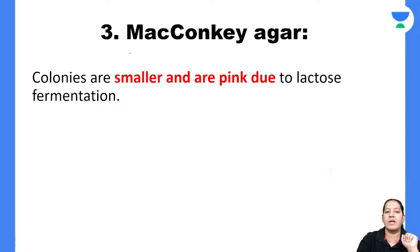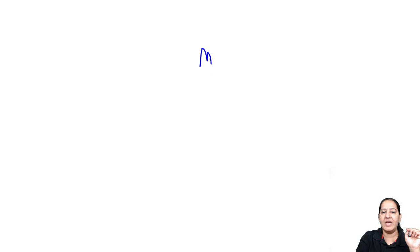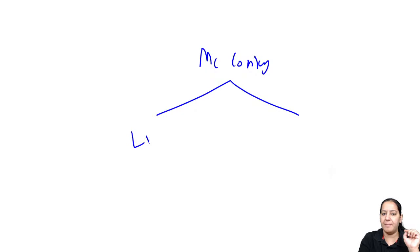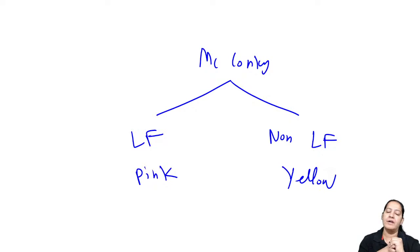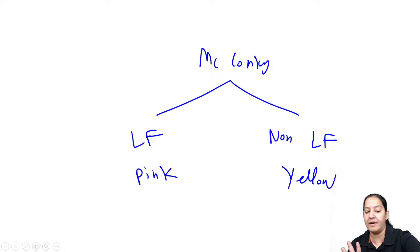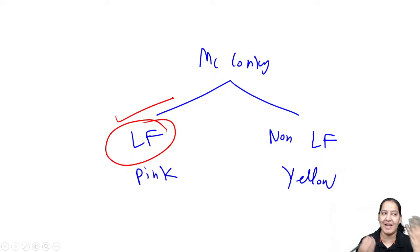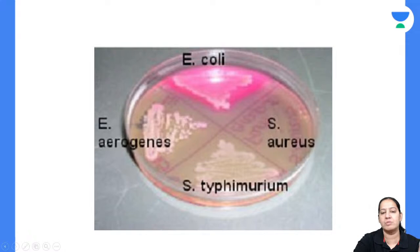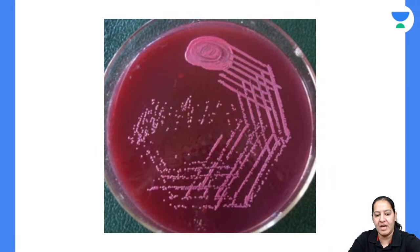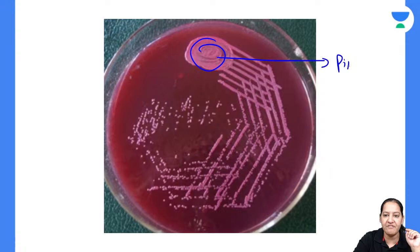On McConkey agar, lactose-fermenting bacteria give pink colonies and non-lactose-fermenting bacteria give yellow colonies. Staphylococcus aureus is a lactose fermenter — it has the enzyme to ferment lactose sugar — so it gives pink colonies on McConkey agar.